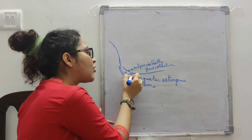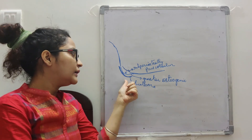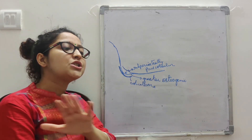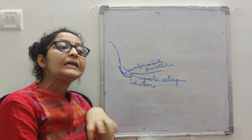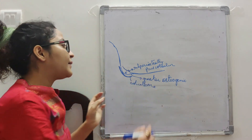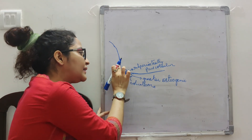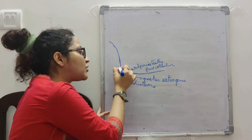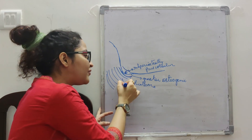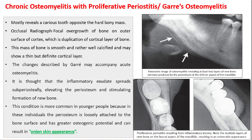Once the inflammation reaches the chronic stage, formation of this bone layer stops. However, if there is an acute exacerbation, pus again collects subperiosteally, pushing the periosteum out again and inducing another layer of bone to form. Every time there is an acute exacerbation, another layer is produced. This results in the characteristic onion-skin appearance seen in Garre's osteomyelitis.